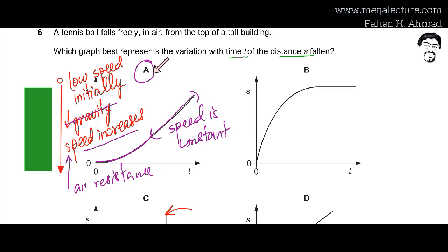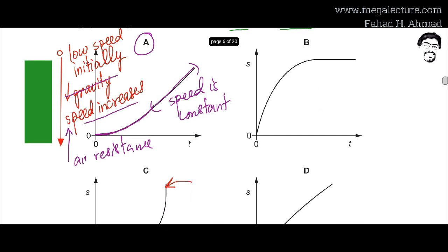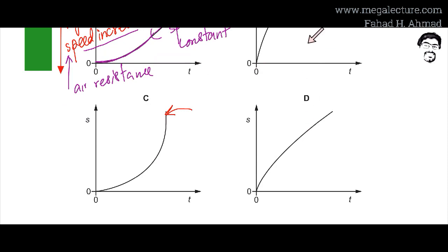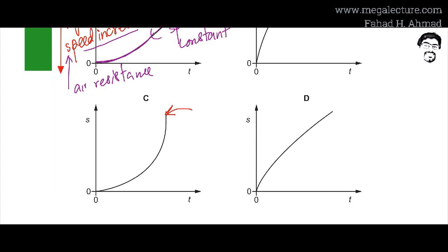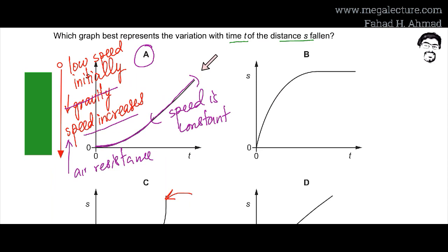Options B and D are incorrect because in those graphs the distance covered eventually decreases or the tangent becomes less steep, implying speed is decreasing — which contradicts the physics. For a distance-time graph, the gradient (tangent) represents speed. In option A, the tangent increases then becomes constant, correctly showing acceleration followed by terminal velocity.